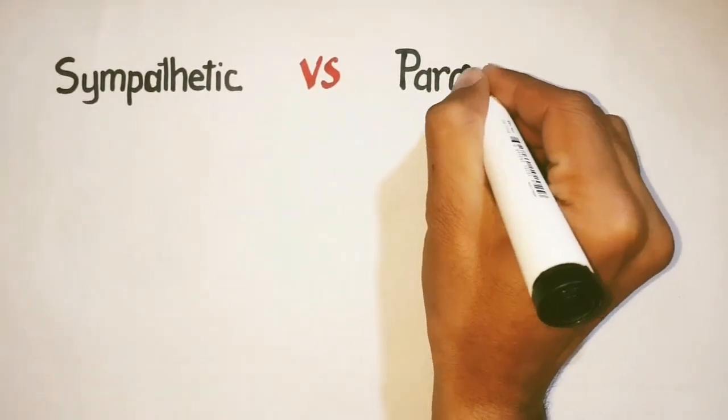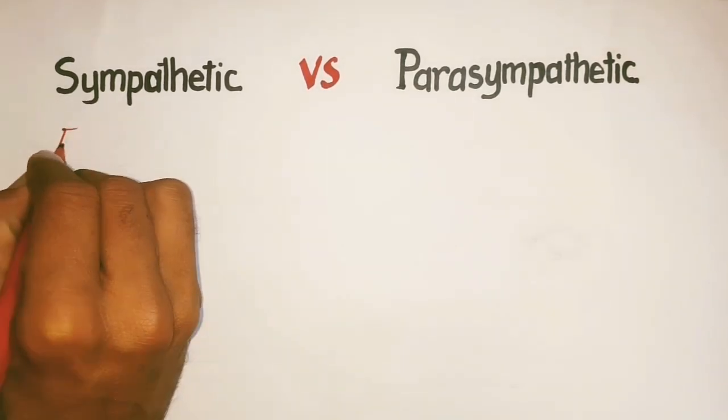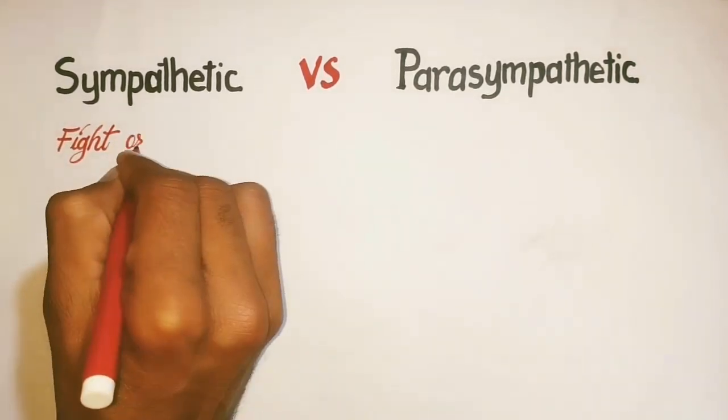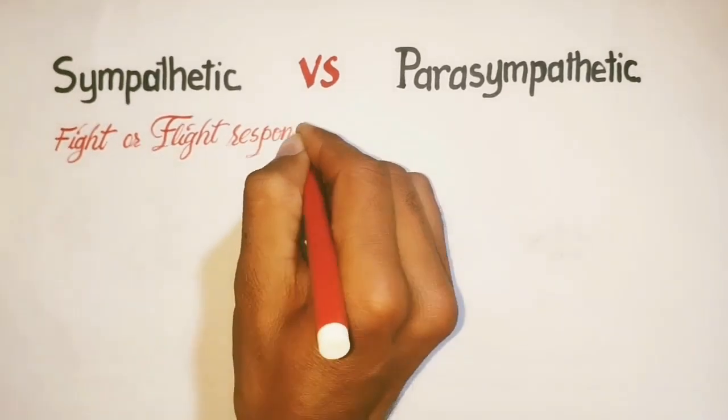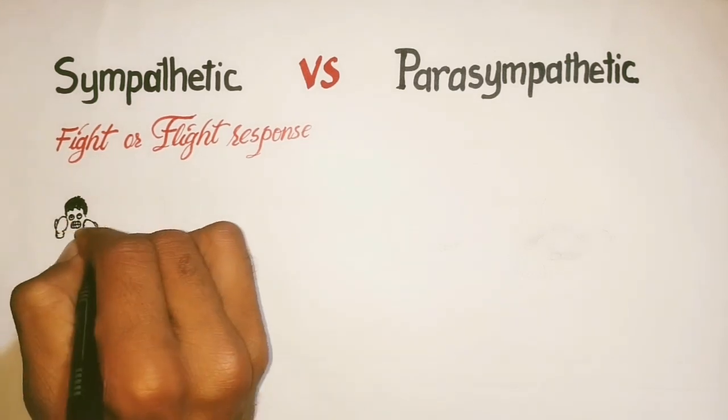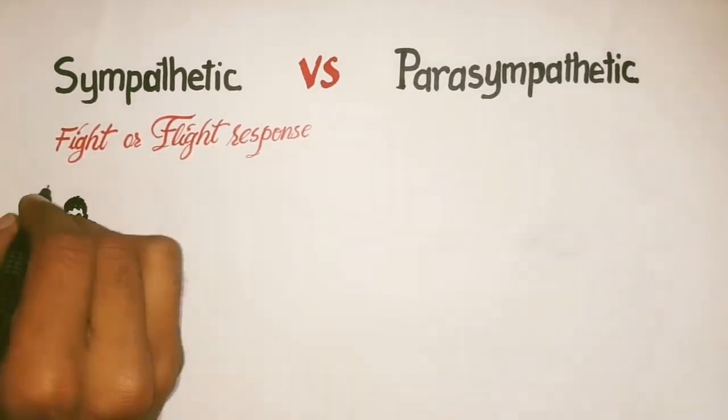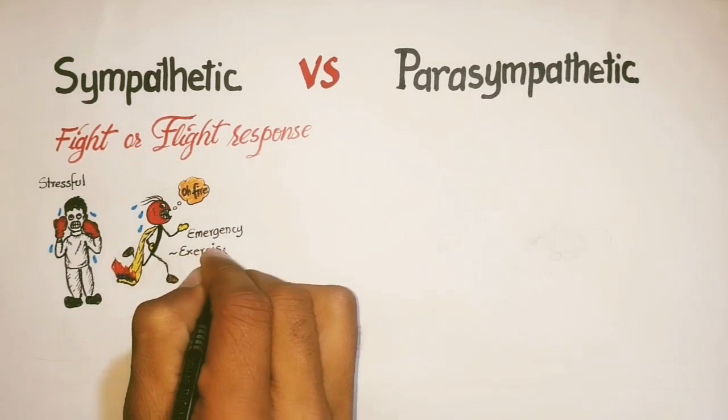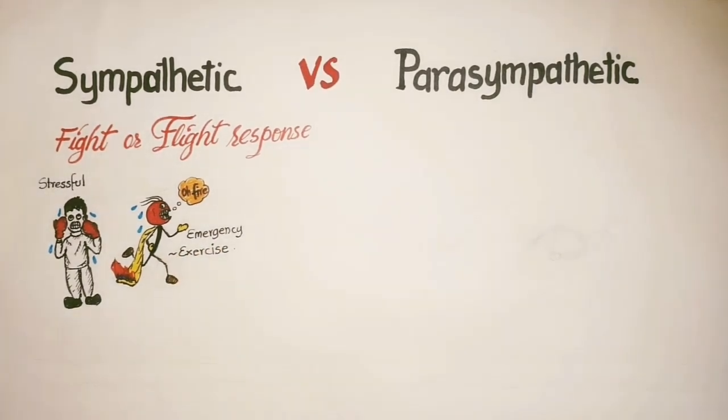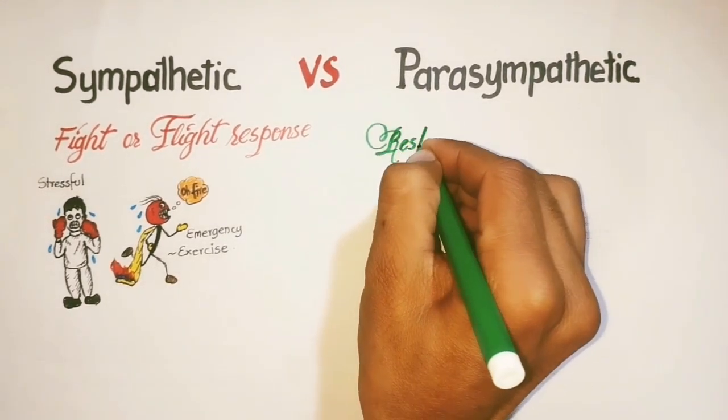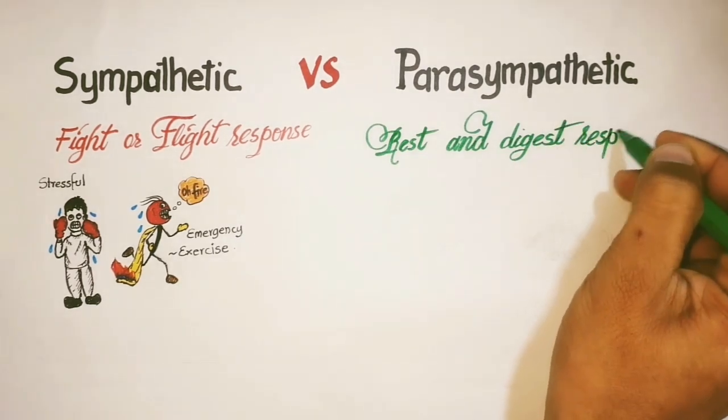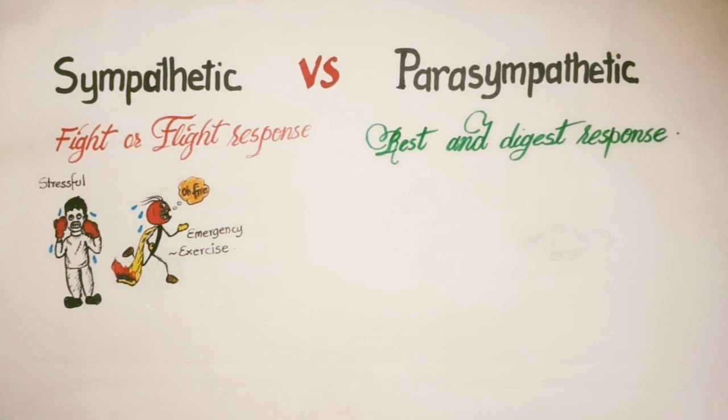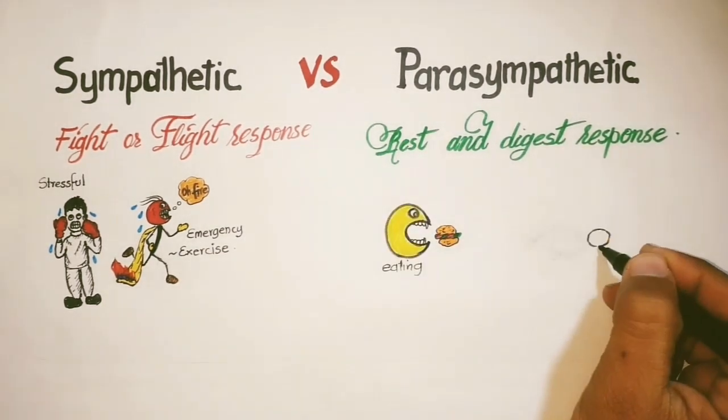The sympathetic nervous system is otherwise known as the fight or flight response, because this division prepares us for stressful and emergency situations as well as for exercise. In contrast, the parasympathetic nervous system is known as the rest and digest response, as this division prepares us to conserve energy and predominate sympathetic activities when we are eating or in a resting state.